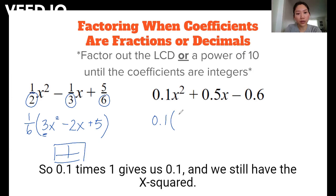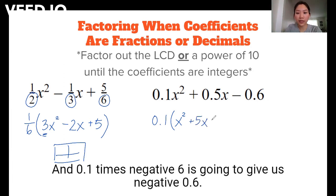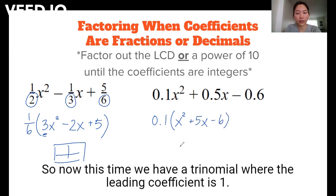So 0.1 times 1 gives us 0.1, and we still have the x². 0.1 times 5 is going to give us 0.5, and we still have an x. And 0.1 times -6 is going to give us -0.6.